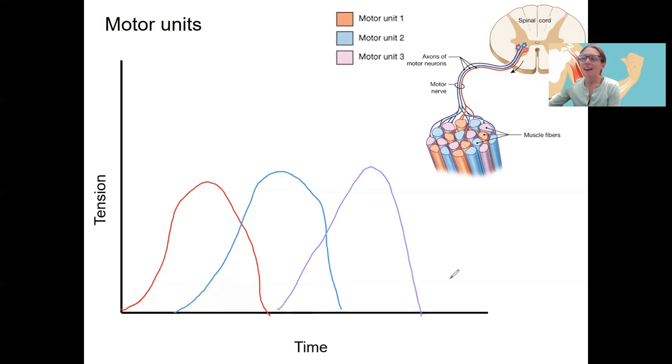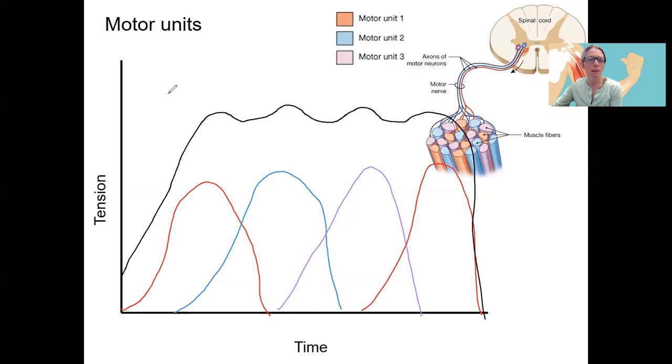And if this muscle only has three motor units, or another reason that maybe other motor units wouldn't be recruited, it goes back to red. So this is a rotating basis of tension generation so that the individual muscle fibers don't get overly fatigued, and the muscle is able to generate the same amount of tension overall.